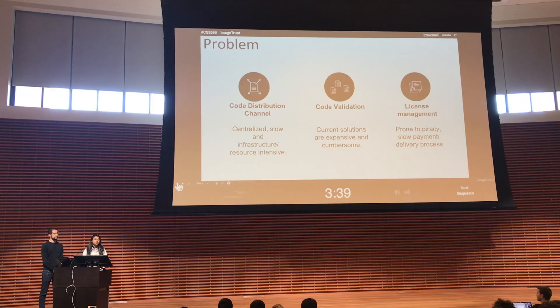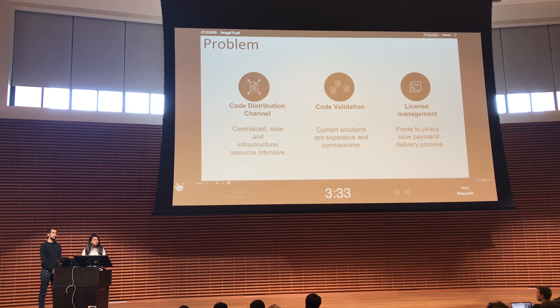This makes it much slower from when a developer has officially released software to get it to the hands of consumers or other companies. And if you don't want to go through specific channels, you have to build your own infrastructure. For example, Apple with their App Store — they have to build and maintain that infrastructure to allow applications and software to be distributed.